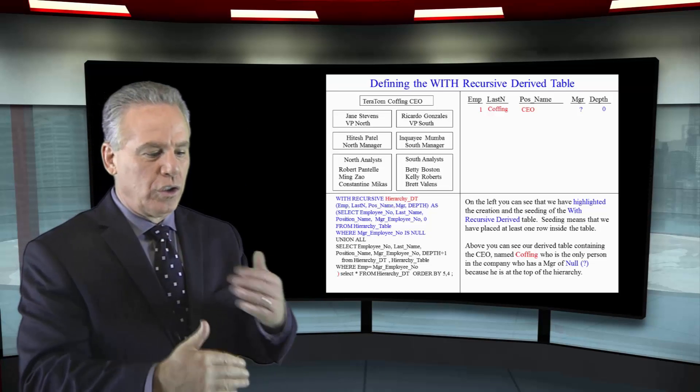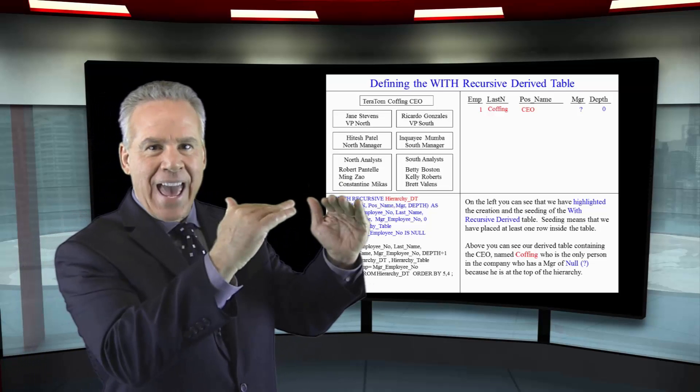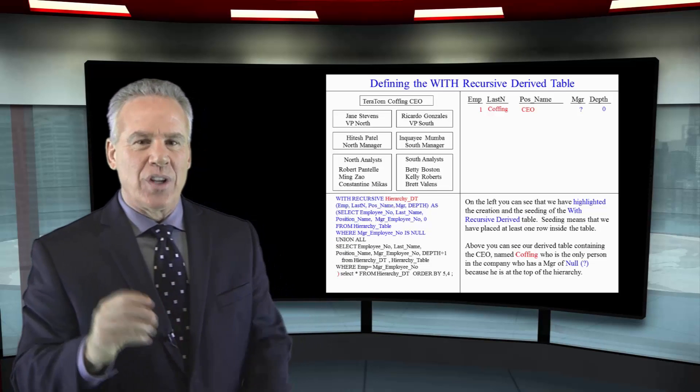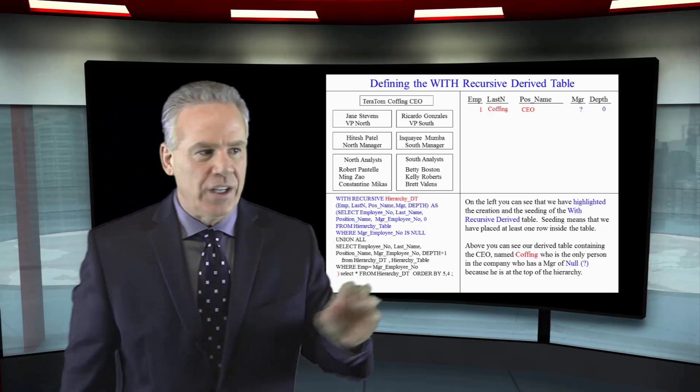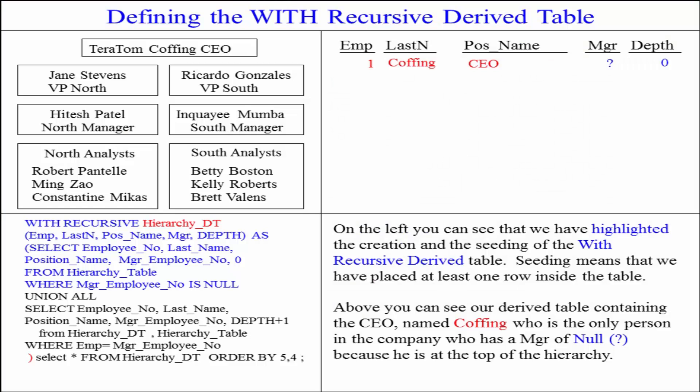From that point we'll go through a looping process to keep adding to that first row and those next rows. This is the very beginning of the seeding. Take a look at what I've got in blue: 'with recursive hierarchy DT.' This is a recursive derived table that we're calling hierarchy DT. The columns in hierarchy DT are: emp, last name, first name, manager, and depth — five columns total.